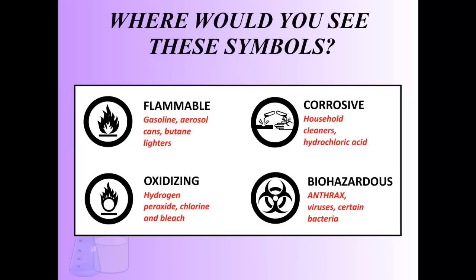The next four are: flammable, corrosive, oxidizing, and biohazardous. Oxidizing means it reacts with air. These are the second set of four symbols — you need to know what each symbol means and some examples of what you might find them on. So those are the eight WHMIS symbols, keeping us safe.